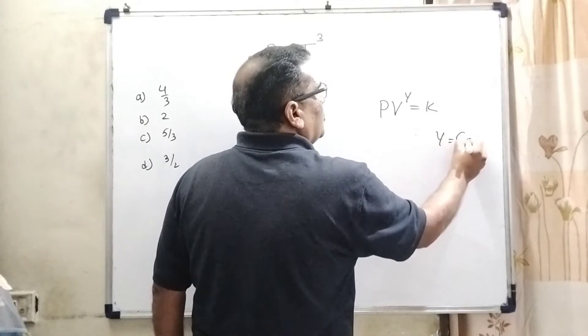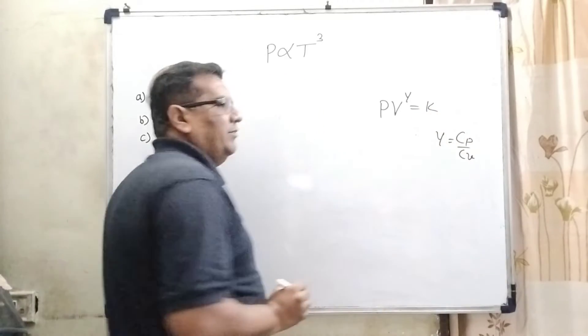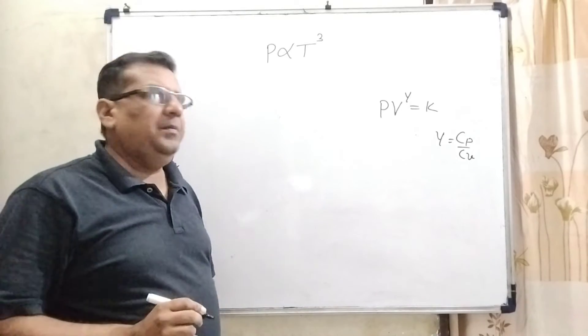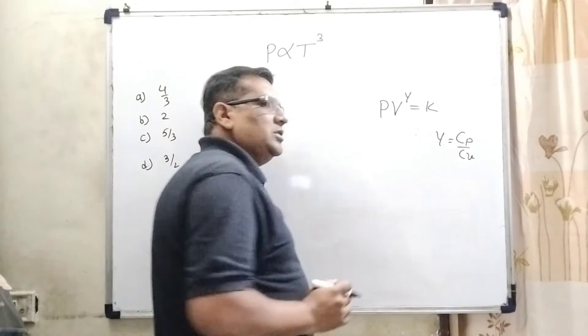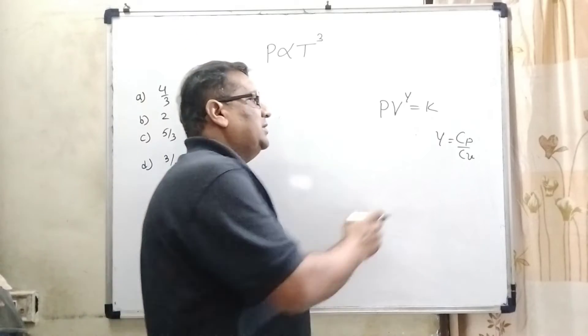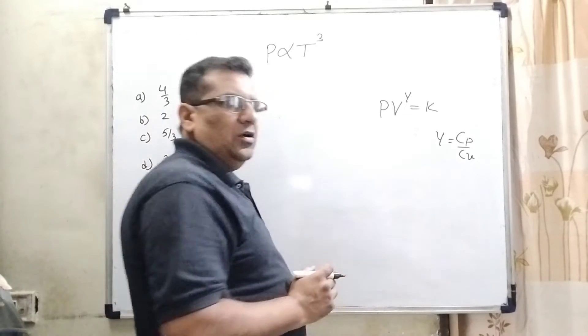Here gamma is the ratio of Cp upon Cv. What is Cp? Cp is specific heat of gas at constant pressure and Cv is specific heat of gas at constant volume.